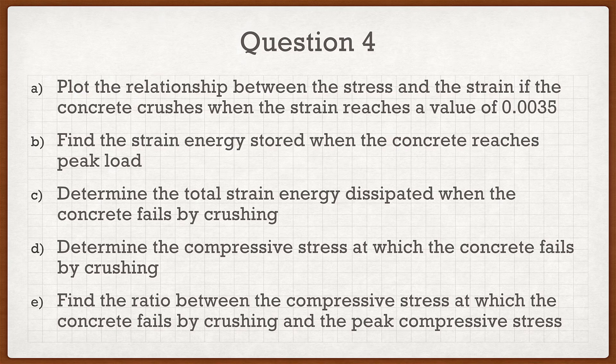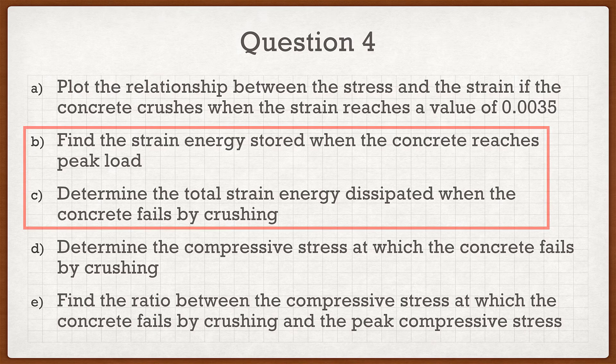Part D asks to determine the compressive stress at which the concrete fails by crushing. That's easy because we have a formula relating stress to strain — all we do is substitute the failing strain into the formula. Part E asks for the ratio between the compressive stress at failure and the peak compressive stress; just take your answer from Part D and divide by f'c. So the new material really comes down to Parts B and C — finding strain energy at two different values of strain.